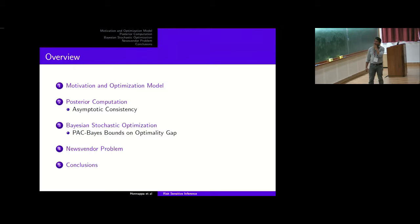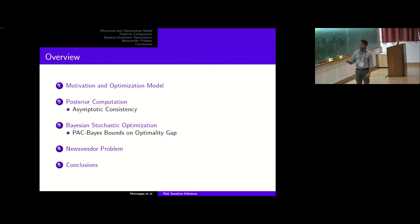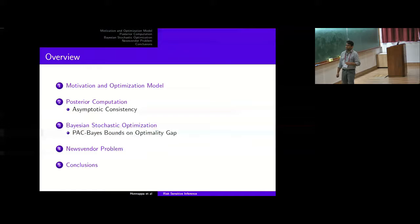Here's an overview of the talk. I'll start with motivation, specifically the optimization problem that led us down the path of thinking about variational Bayes. Once you start thinking about this, you immediately ask: how do I compute posteriors? Then we want to understand certain asymptotic properties of these approximate posteriors. I'll come back to the stochastic optimization problem and talk about PAC-type bounds and the optimality gap. I'll also present one numerical result, and then end with conclusions.